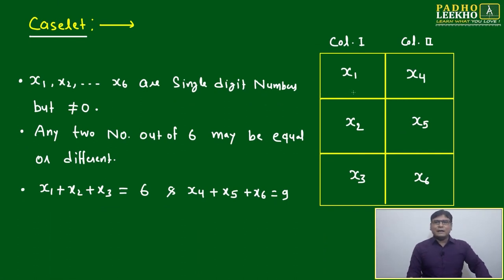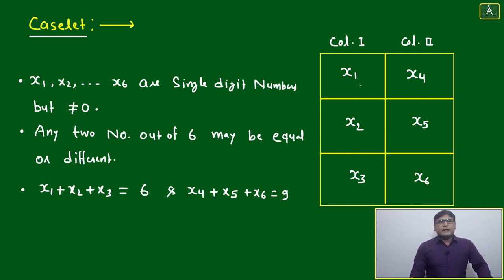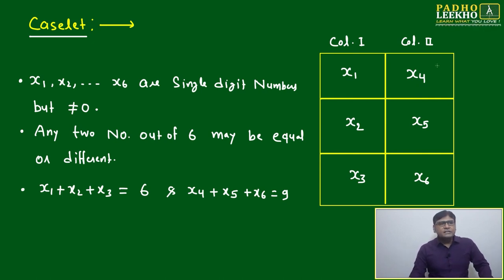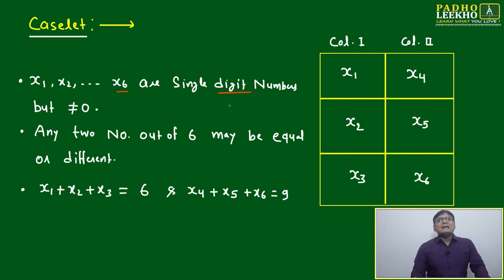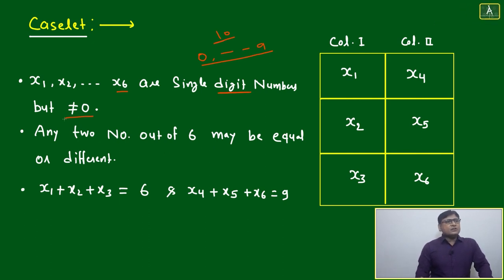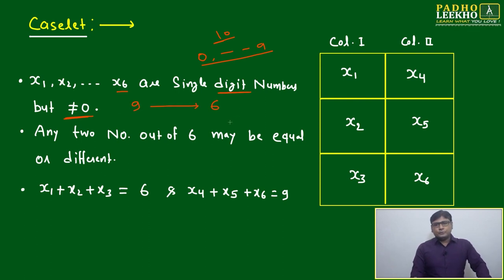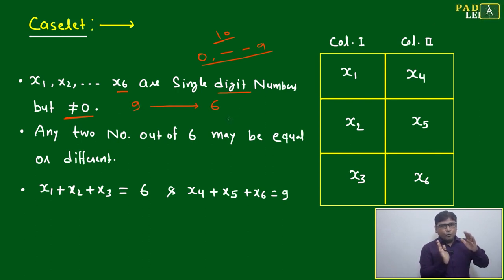This is a simple caselet — don't expect a very high level. The caselet has two columns with six numbers: x1, x2, x3 in column one and x4, x5, x6 in column two. The first condition is that x1 through x6 are single-digit numbers, meaning they range from zero to nine. Since the numbers are not equal to zero, that eliminates zero, leaving nine options — nine inputs, six outputs.